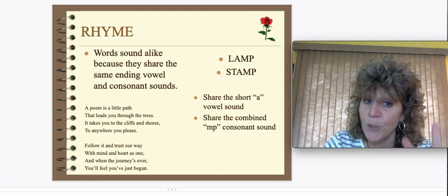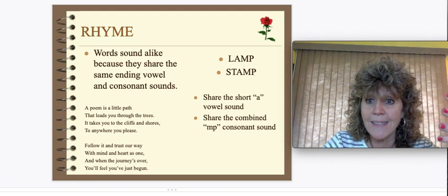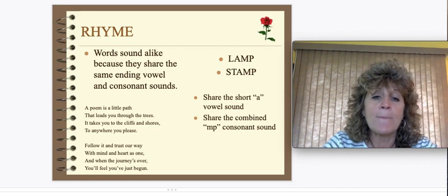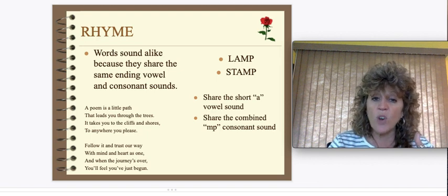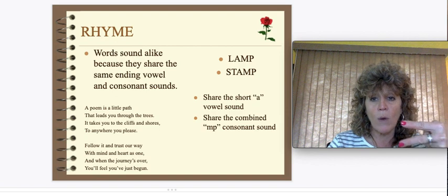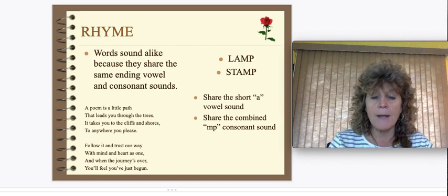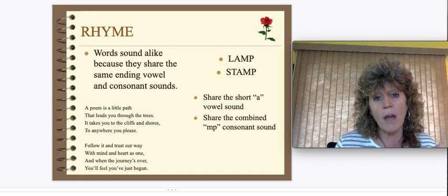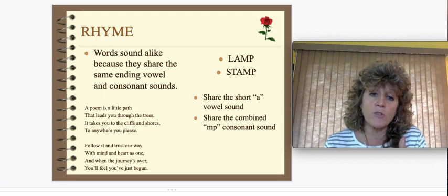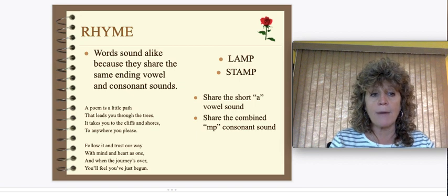If you look at that poem, first of all there are two stanzas with four lines each — so those are quatrains. When you look at the rhyming pattern, it's path, trees, shores, and please. The second and the fourth lines rhyme — and that's what's called an ABCB pattern. Not every line has to rhyme; sometimes every other line rhymes, and sometimes the first two rhyme with the last two. That's what I call the rhyming pattern.